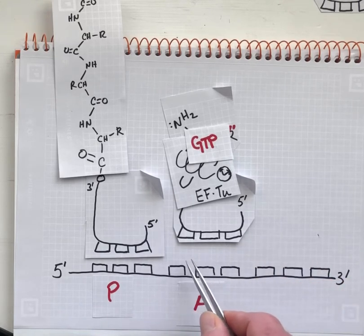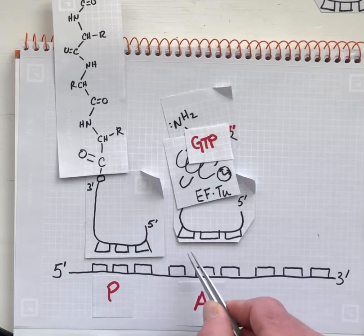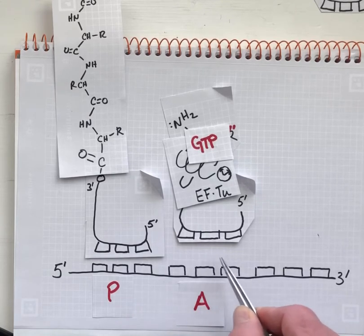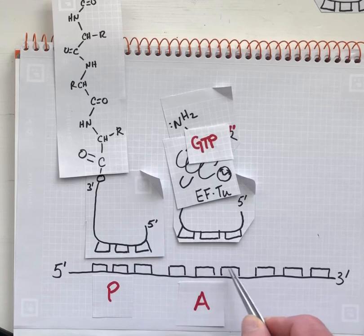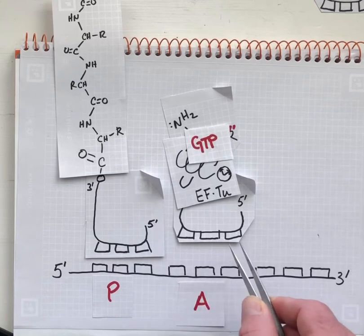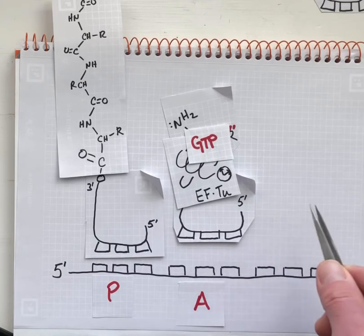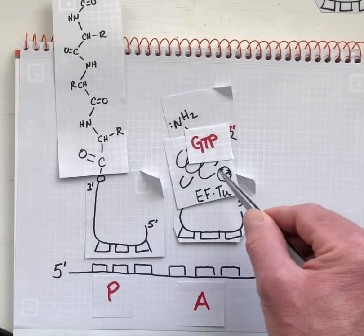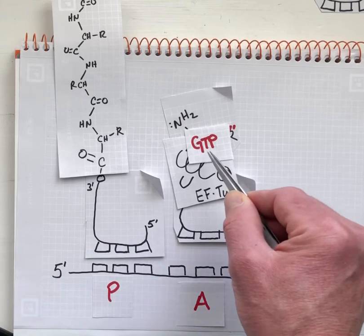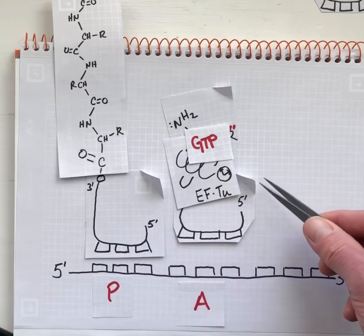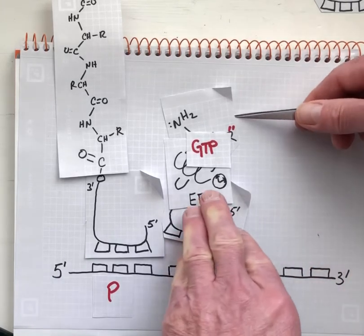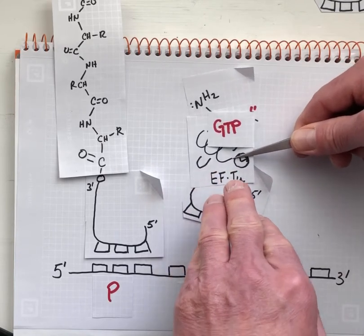It's a fairly complicated matching function that has to happen here when decoding this A site codon, and things that don't make a good match will leave quickly before the clock can run out and before GTP can be hydrolyzed. So this whole complex, if this is not the right match...